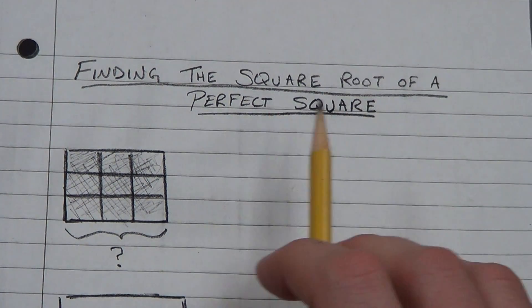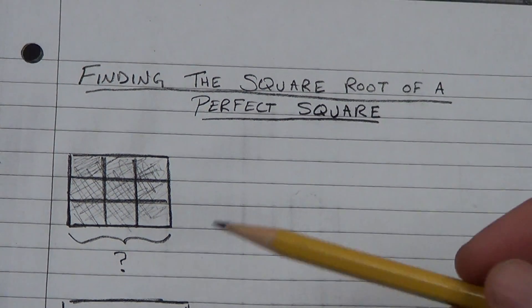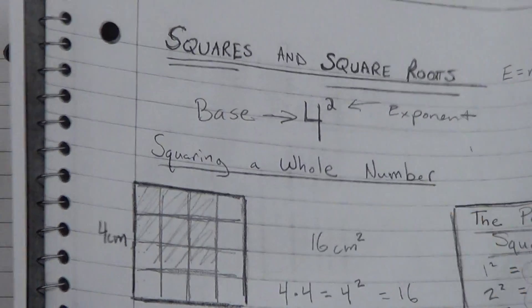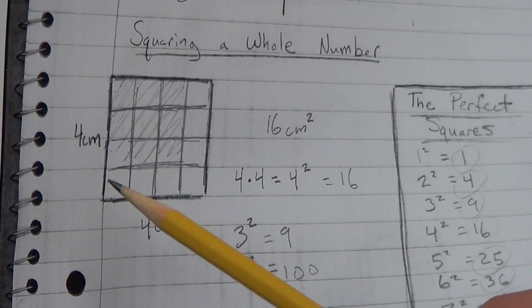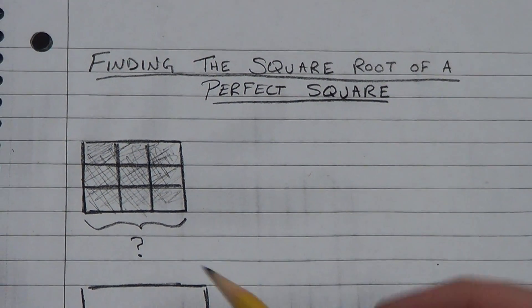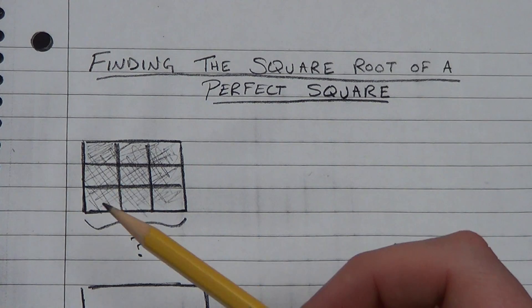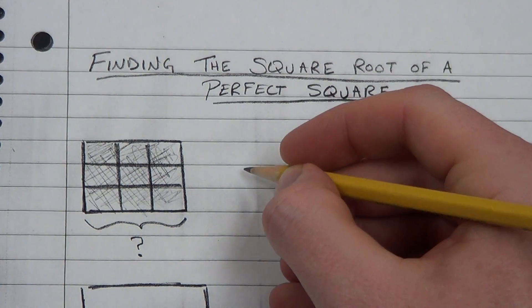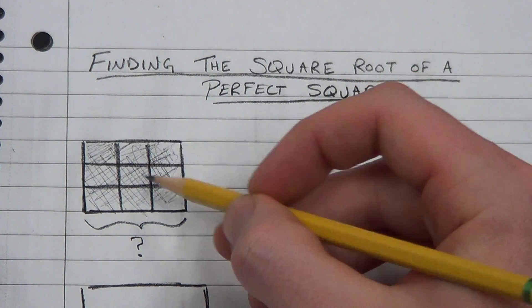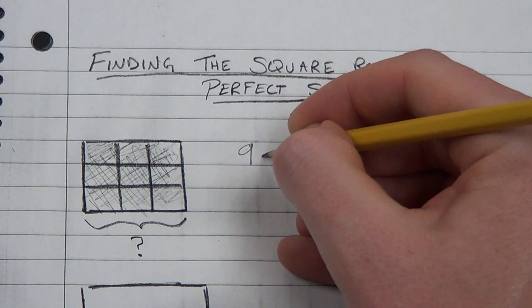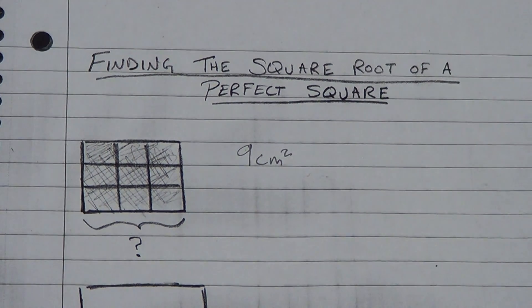A square root is the inverse of the square. In the first example I talked about finding the area of a square — if I had a side of 4, then 4 times 4 is 16, so 4 squared is 16. Now I'm going the other way. Here I'm giving you the area: I have 9 square units — let's say square centimeters — and the area is 9 square centimeters.